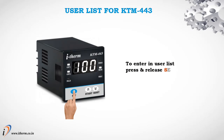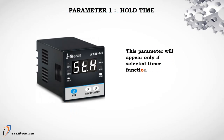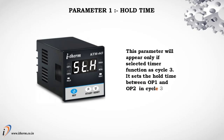User list for KTM 443. To enter the user list, press and release the set key once. Parameter 1: hold time. This parameter will appear only if the selected timer function is cycle 3. It sets the hold time between output 1 and output 2 in cycle 3.